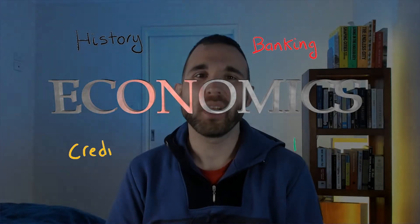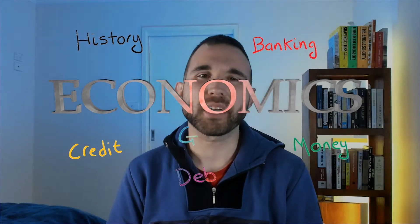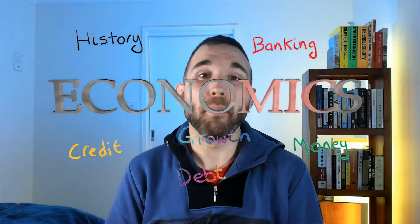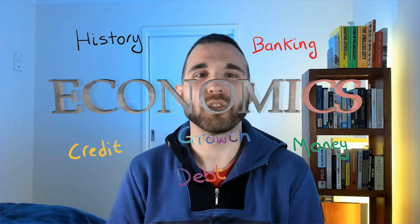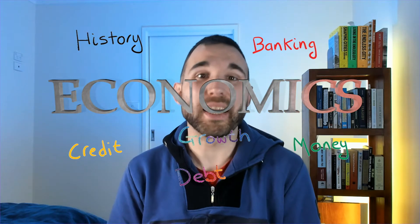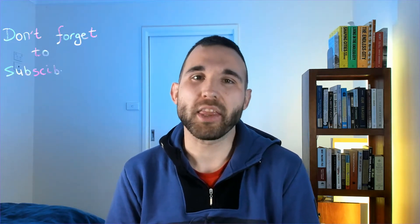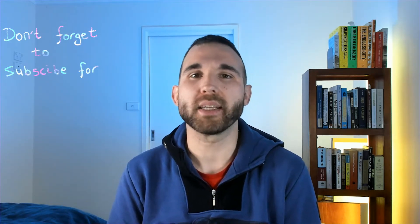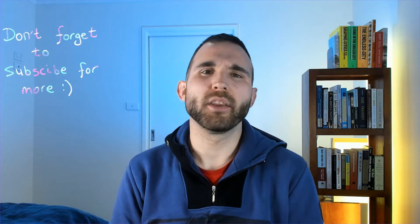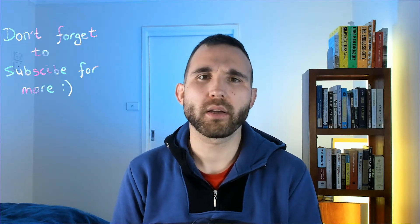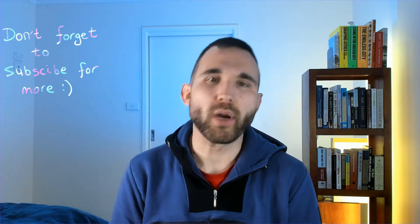Welcome to my economics channel, where I love discussing the subject, but most importantly, I like to make it something fun to learn. In today's episode, I want to discuss something which might be a little bit more complex, but I'll break it down. That is the relationship between the RBA and the big four banks in Australia — ANZ, the Commonwealth Bank, NAB and Westpac.